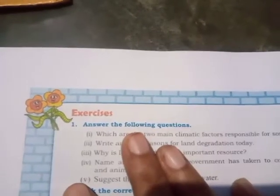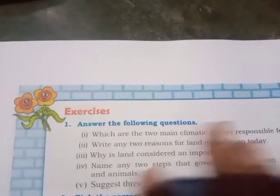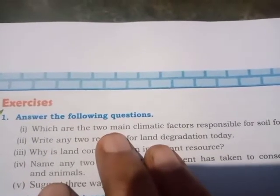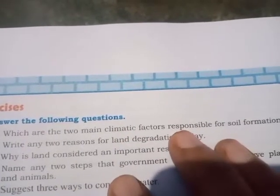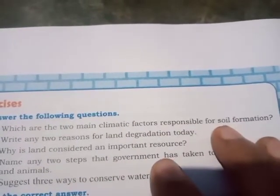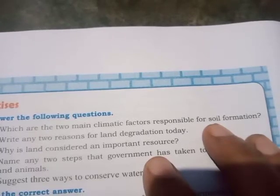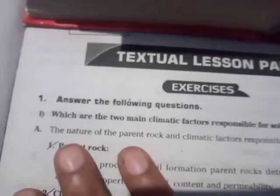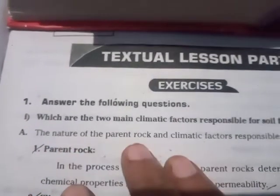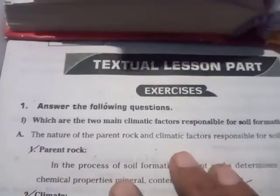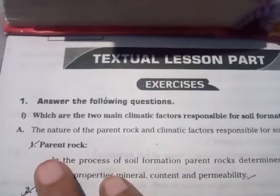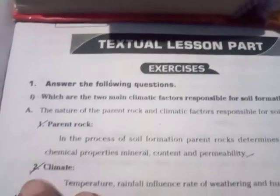Exercises. Answer the following questions. First question: Which are the two main climatic factors responsible for soil formation? Answer: The nature of the parent rock and climatic factors are responsible for soil formation. First point: Parent Rock. Second point: Climate.